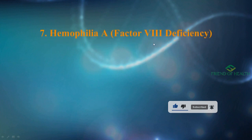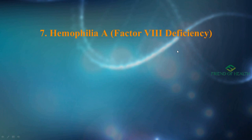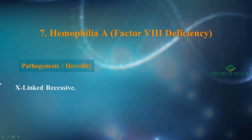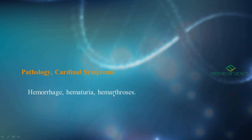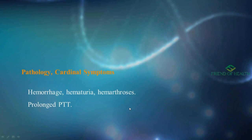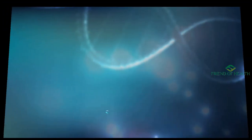The seventh condition is hemophilia A — factor VIII deficiency. Clotting factor deficiencies are very important, including hemophilia A, hemophilia B, and von Willebrand disease. Hemophilia A is an X-linked recessive disease with factor VIII deficiency. The cardinal symptom presentation includes hemorrhagic manifestations such as hemarthrosis.